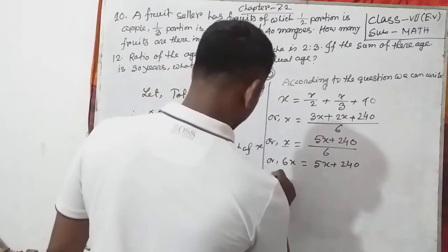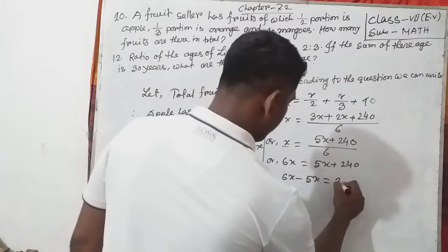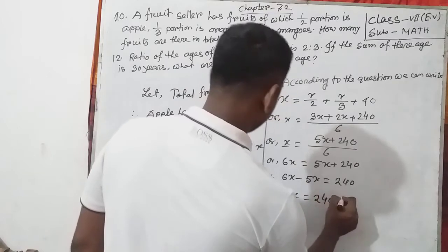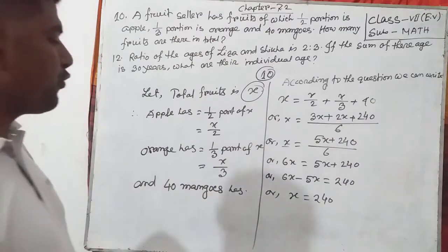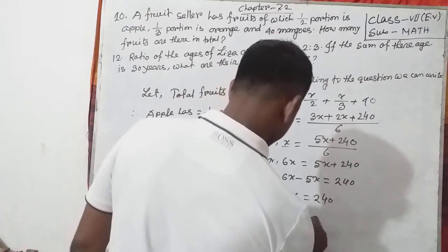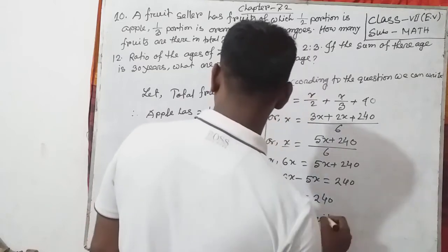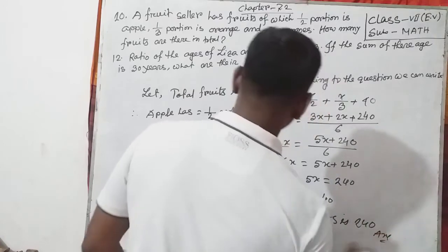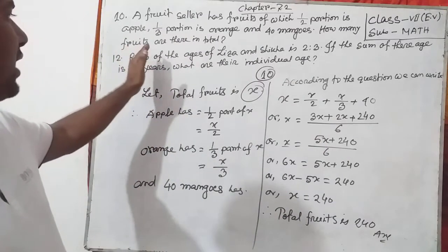We can write 5x plus 240 and 6x. Now shift 5x from the left side to the right side: 6x minus 5x equals 240, so x equals 240.